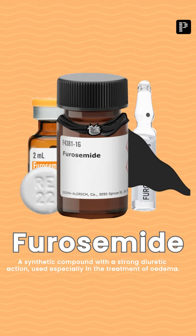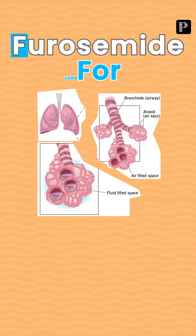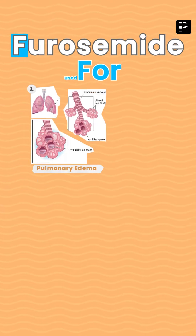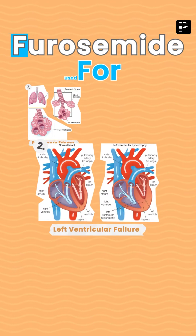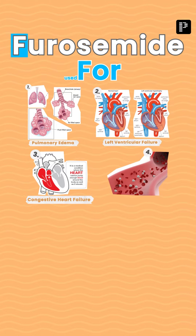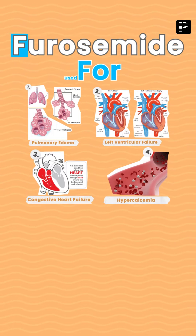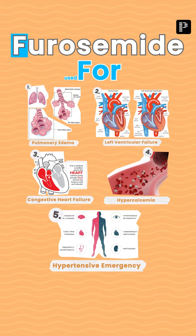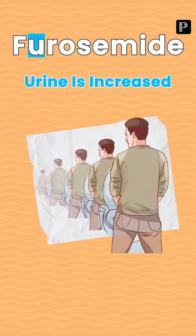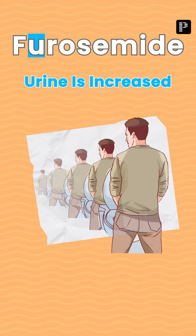F: the drug furosemide is used for the management of number one, pulmonary edema; left ventricular failure; CHF; hypercalcemia; as well as hypertensive emergencies. U stands for urine — urine is increased, since they are diuretics.